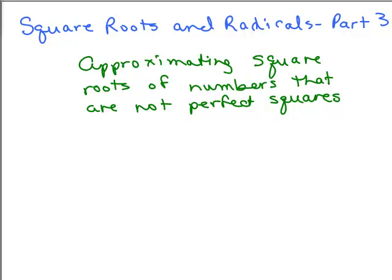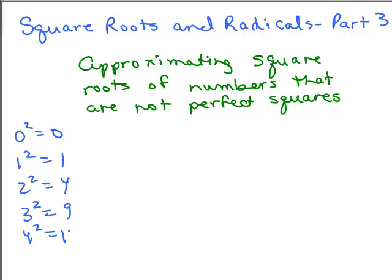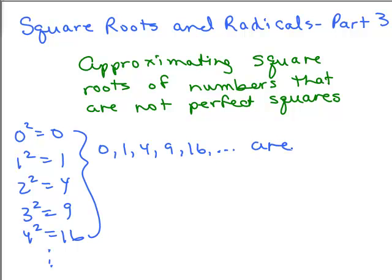This is part 3 of Square Roots and Radicals. I'm going to go over how we might approximate a square root of a number that is not a perfect square. We do know the perfect squares: 0 squared, 1 squared, 2 squared, 3 squared, 4 squared, et cetera. So 0, 1, 4, 9, 16 — those are called perfect squares because they're squares of whole numbers.